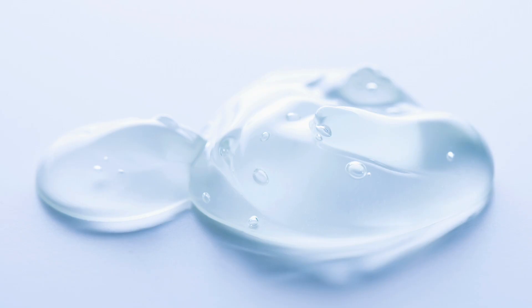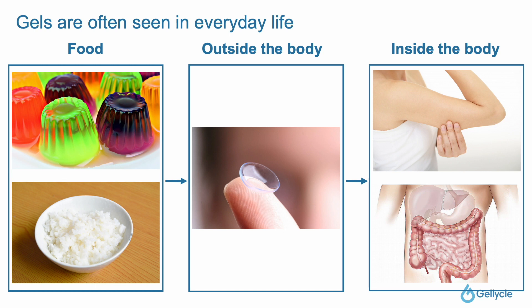First of all, have you ever heard of gel? Gel contains water and feels soft and pliable to the touch. In fact, there are many gels around us. For example, jellies and rice as foods are also a type of gel. Contact lenses and other items used outside the body are also made of gel. Actually, human skin and organs also have a gel structure.